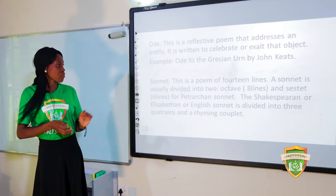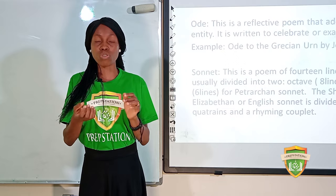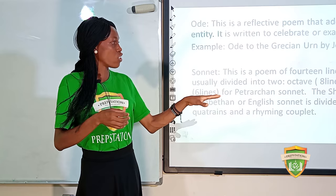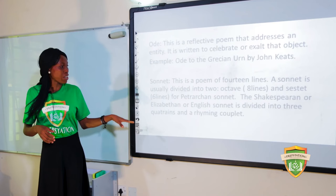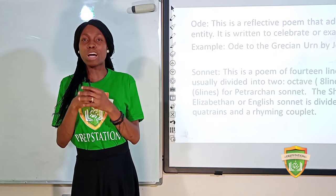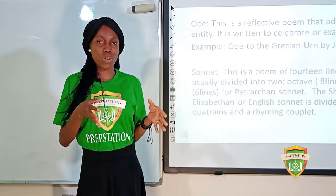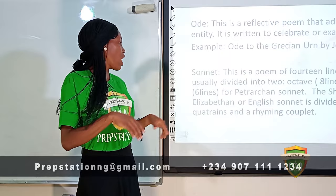A sonnet is a poem of 14 lines, usually divided into two parts. The Petrarchan sonnet has an octave (8 lines) and a sestet (6 lines). The Shakespearean, Elizabethan, or English sonnet is divided into three quatrains (4 lines each) and a rhyming couplet (2 lines). You may be asked exam questions on these distinctions.